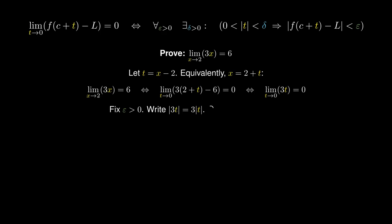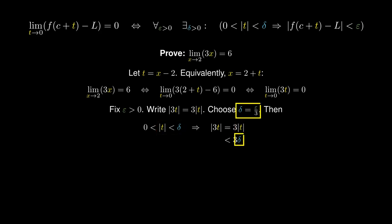We can choose delta to equal epsilon over 3. Then if we restrict the input error to be smaller than delta, this implies that the absolute value of 3t, equaling 3 times the absolute value of t, using the hypothesis, must be smaller than 3 delta. Using our choice of delta, this must equal 3 times epsilon over 3, which equals epsilon. To verify: for any epsilon greater than 0, we have found a delta greater than 0 such that if the inputs are bounded by delta, then the outputs are bounded by epsilon. This helps us prove the modified limit proposition, which is equivalent to the original limit proposition.